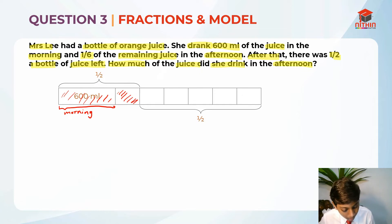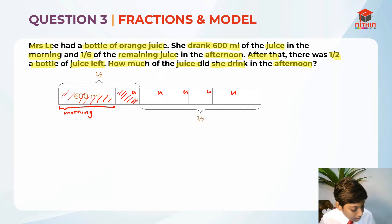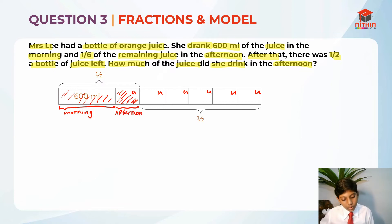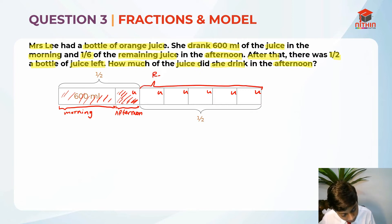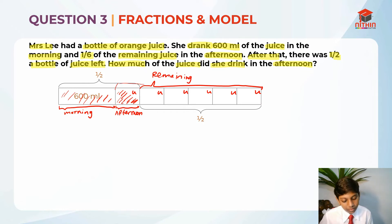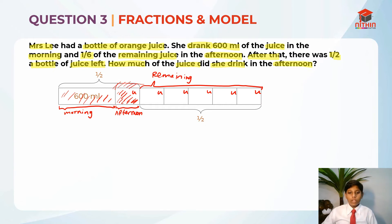So there's 1 unit, 2 unit, 3 unit, 4 unit, 5 unit, 6 unit. She drank 1/6 of the juice in the afternoon — she drank 1/6 of it in the afternoon. All of this is the remaining over here, and then after she drank, this became the new remaining. I hope you understand that.